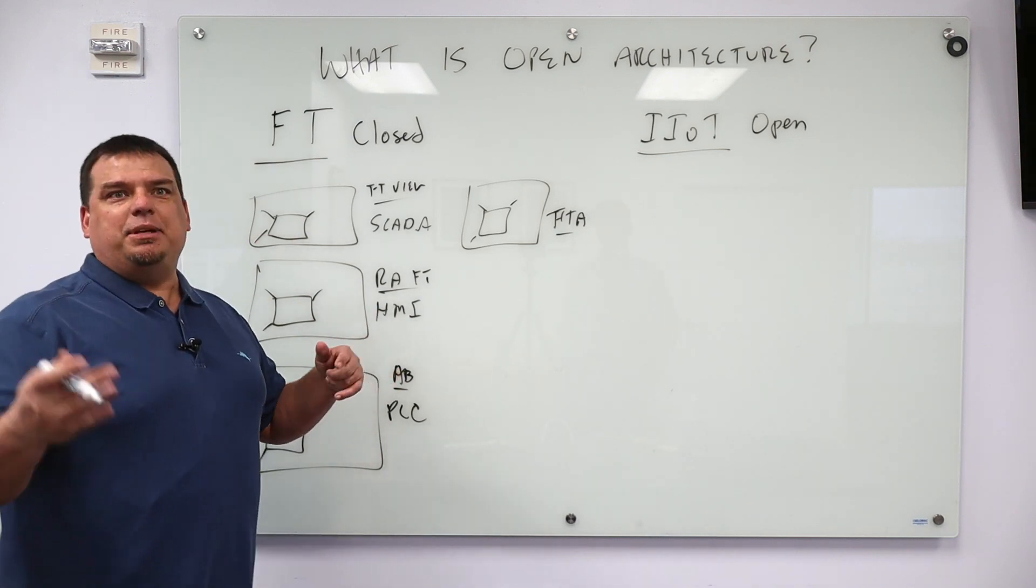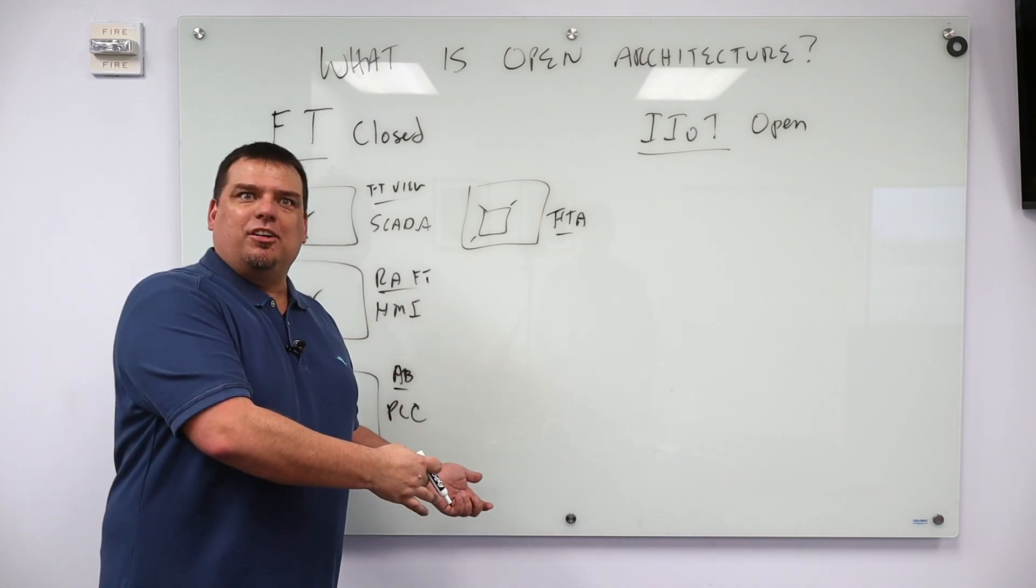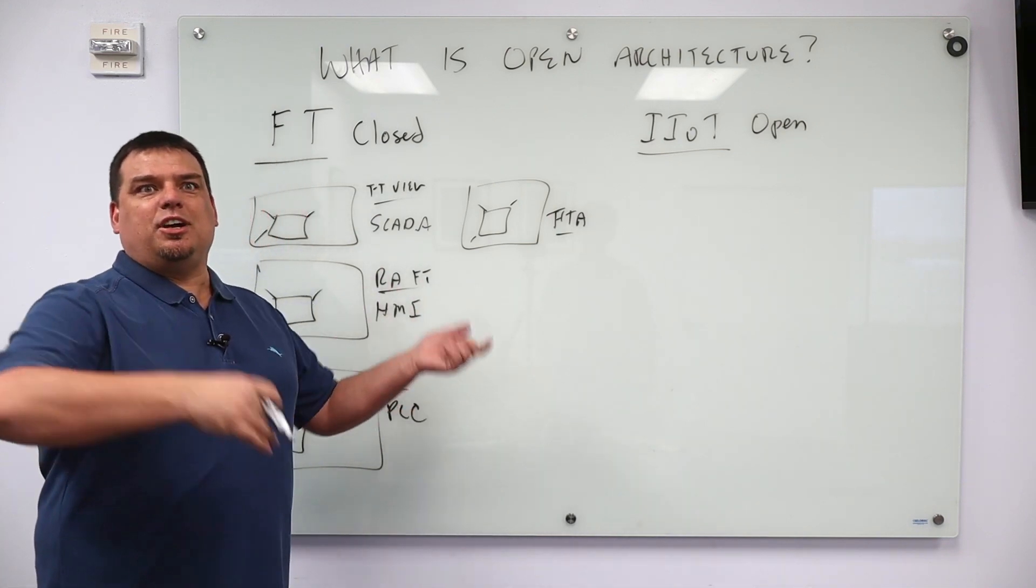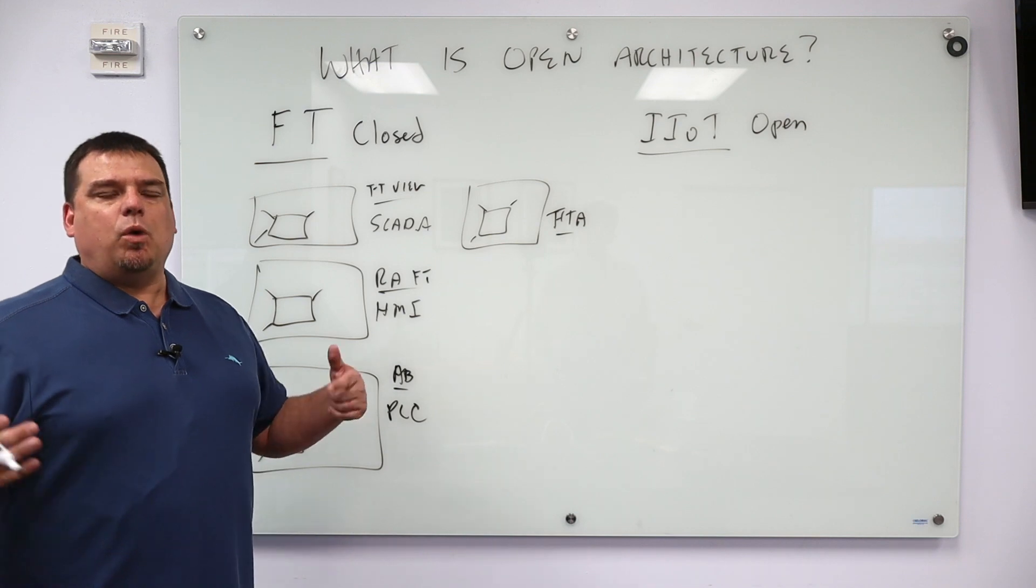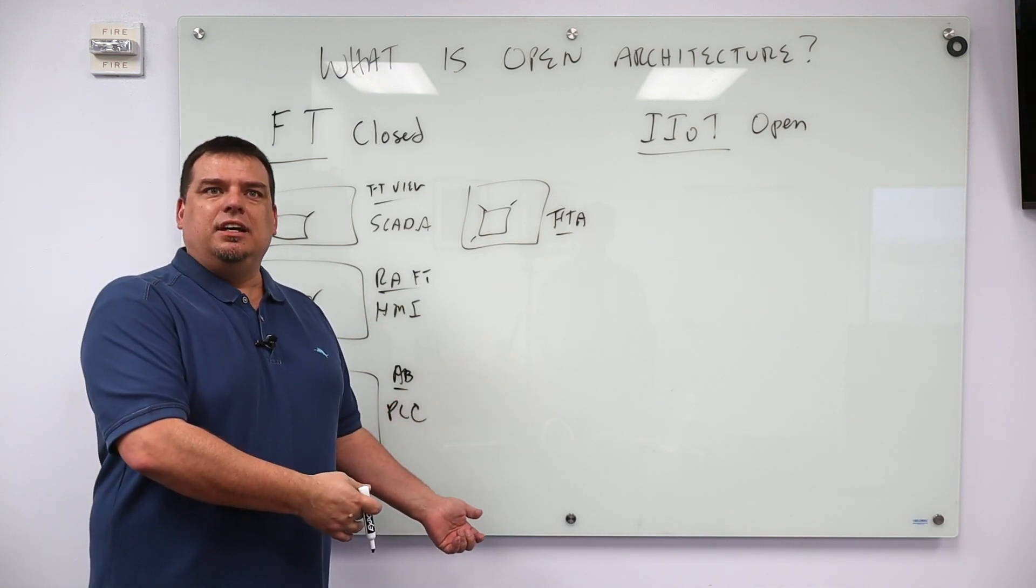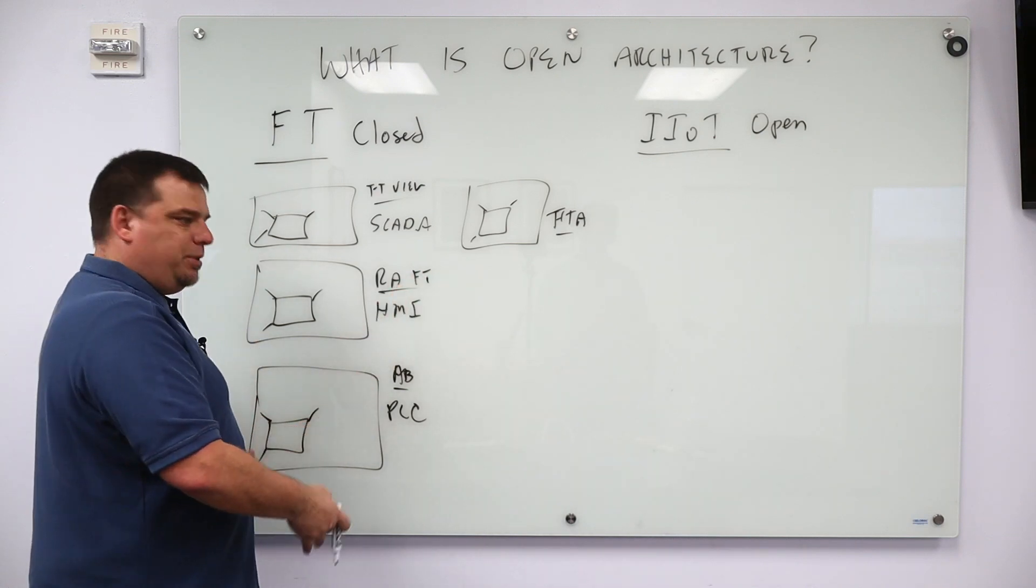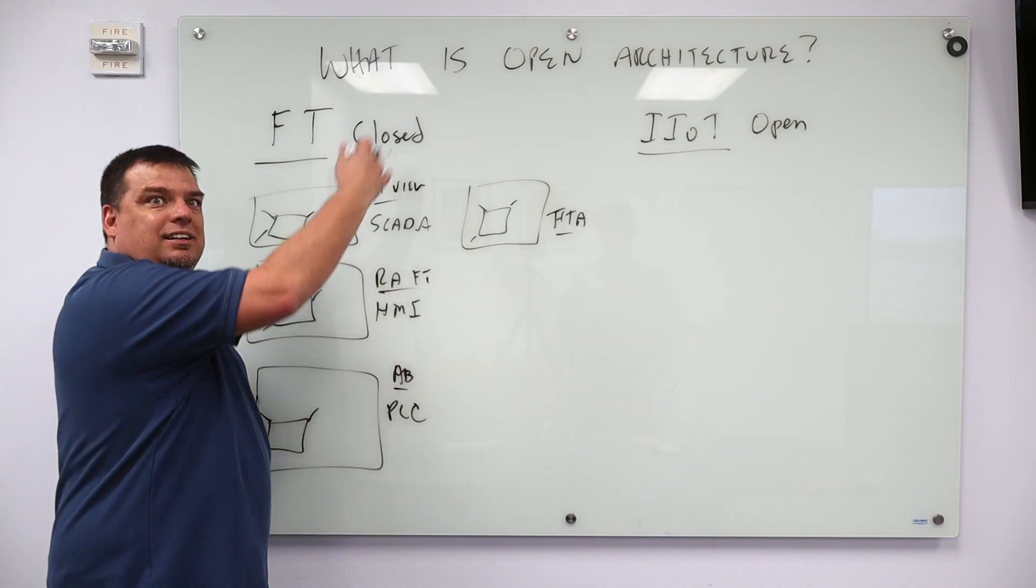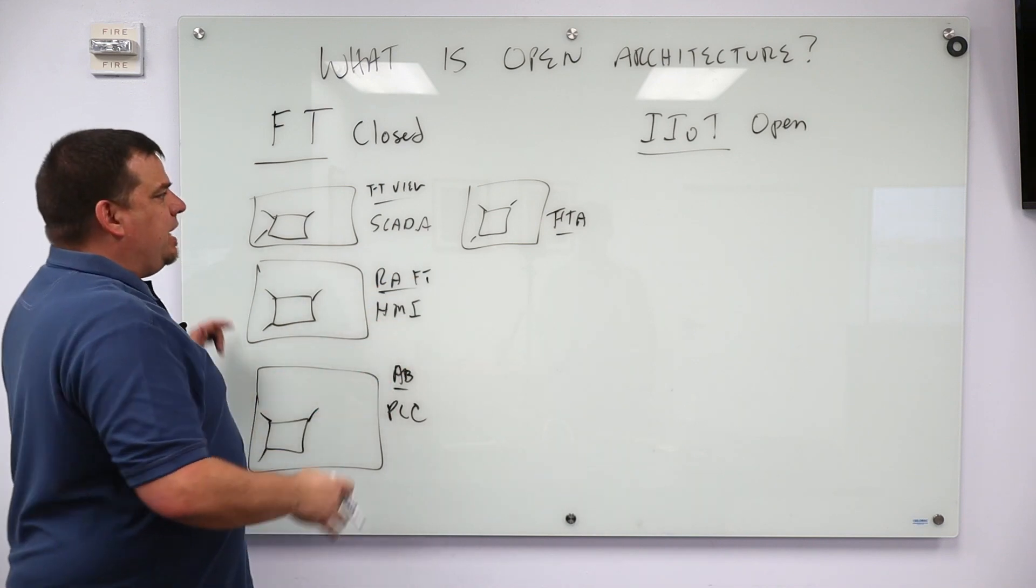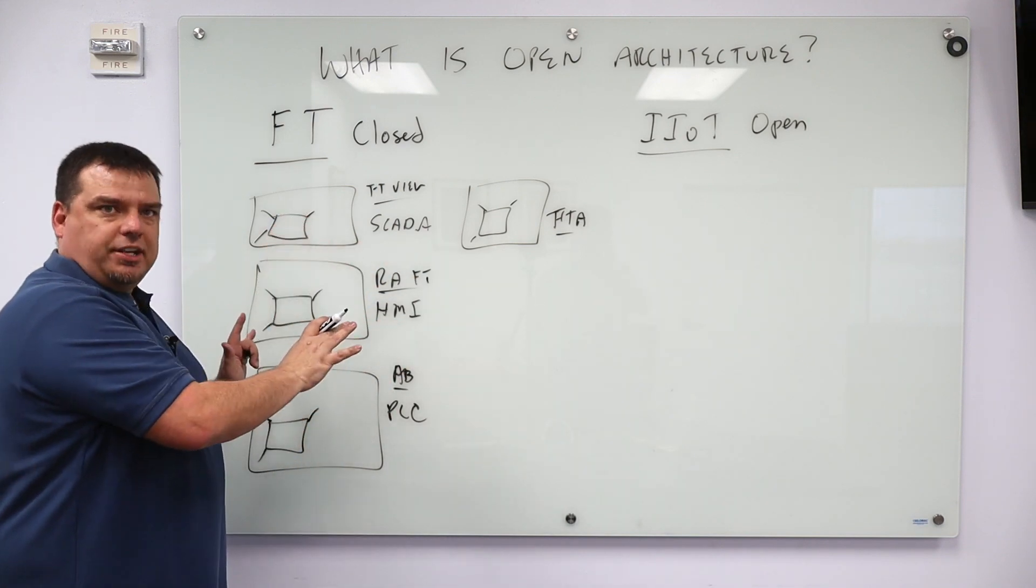Let's say I want to publish this object using an open protocol to a data lake somewhere. Rockwell is a Microsoft partner, so they play well with Microsoft. They don't play well with AWS. What if I've already settled on AWS and now I've essentially created a barrier between my data and my information? That's a closed architecture.